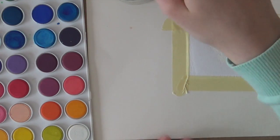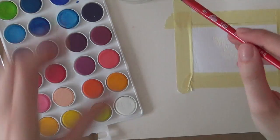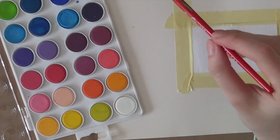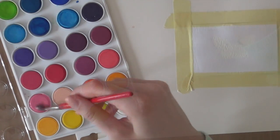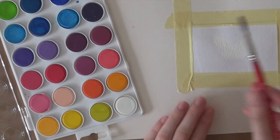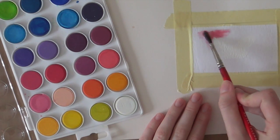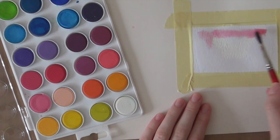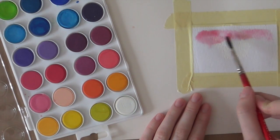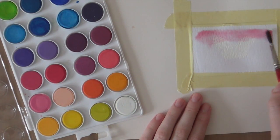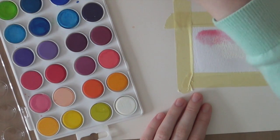Pick up some color. And the first color that I'm going to use is this bright pink over here. And now I'm just adding the color onto my piece of cardstock. There we go.